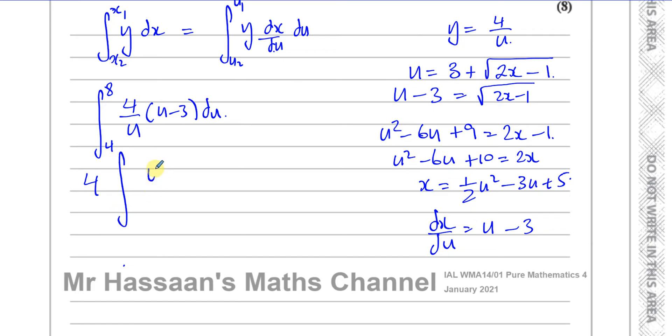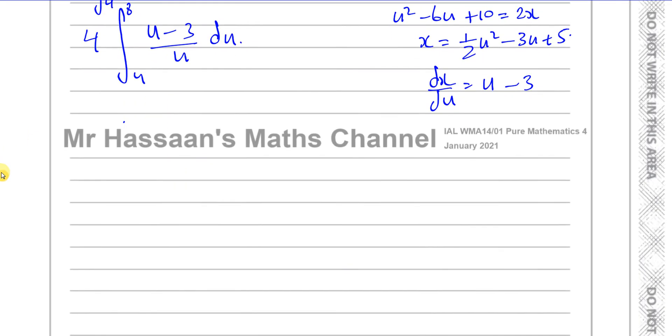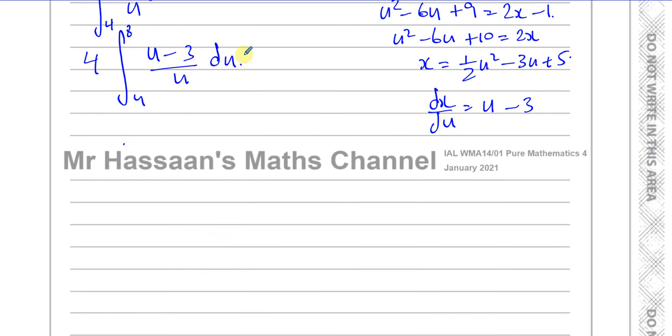So now I have got almost what I need. I can write that 4 outside here, and I can write this as u minus 3 over u, and I've got the limits of 8 and 4. I want to integrate that with respect to u. To integrate that with respect to u, I need to separate this into two separate fractions. It's like u over u minus 3 over u. Just write them under a separate denominator. So you've got 4, and you've got the limits between 8 and 4. I'm going to have u over u, which is 1, minus 3 over u.